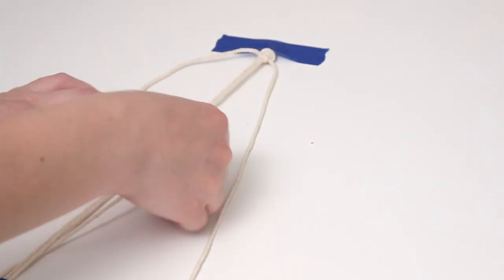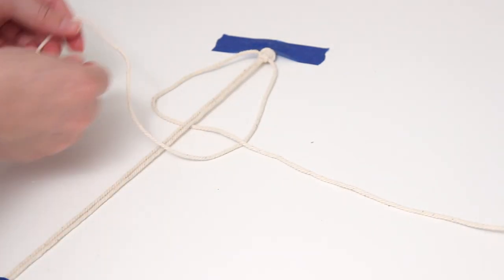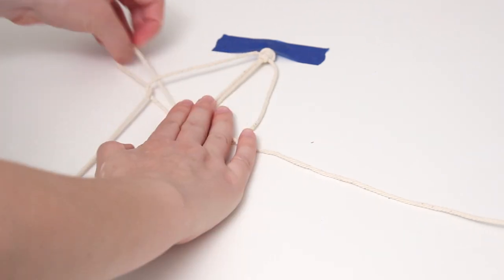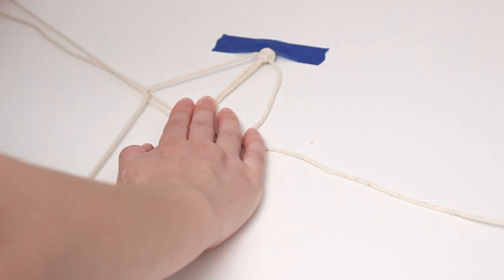Then you're going to basically do the reverse. So take your piece on your left, bring it under your center cords, take that piece on the right, bring it over your center cords and under your piece on the left, pull it all the way through and then pull them tight.